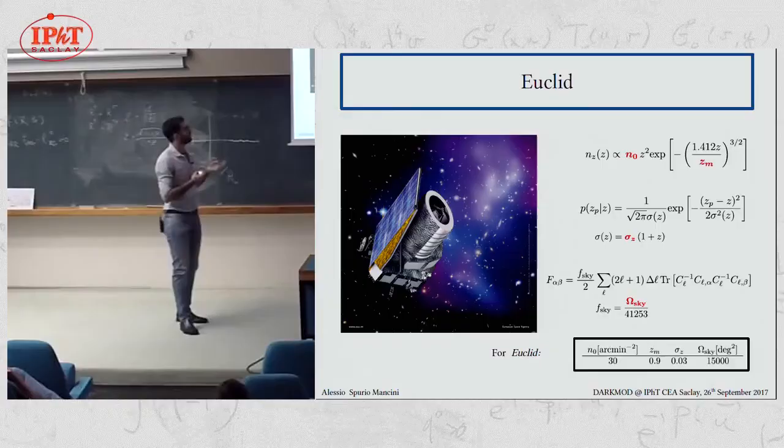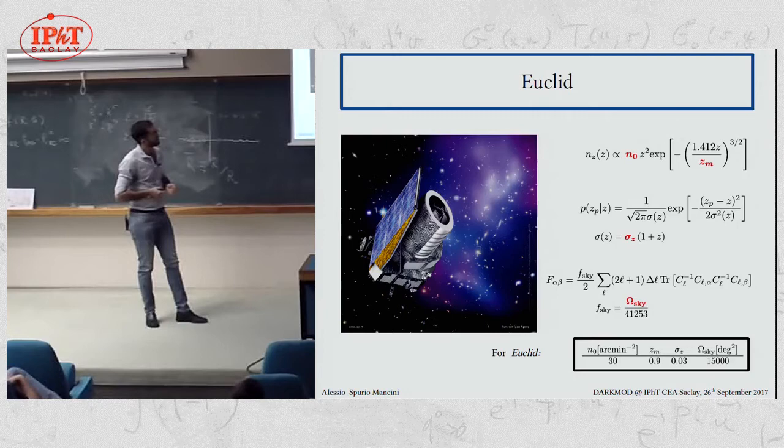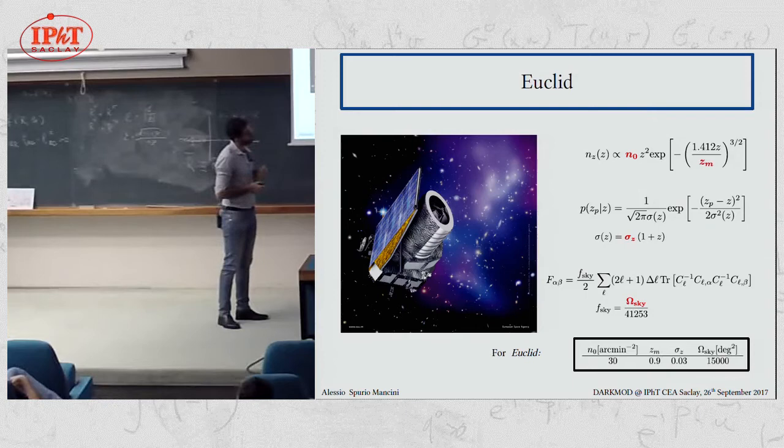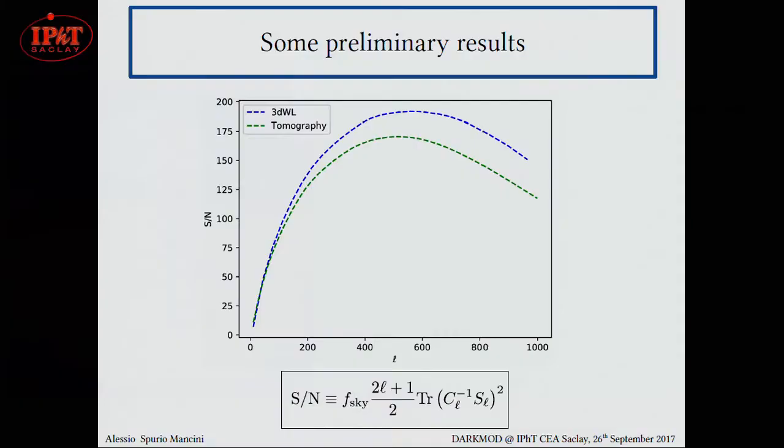Before I show you some preliminary results, I would like to remind you that this is a forecast for Euclid. So I use Euclid specifications, in particular for the source distribution, for the redshift probability distribution, and for the fraction of sky covered. And also, I would like to remind you the formula for the Fisher matrix, where the covariance matrices are included. So that's why we have to calculate them.